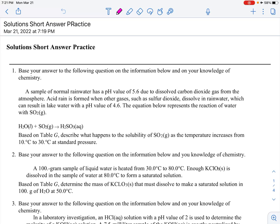Okay, so these are some short answer questions for solutions. First of all, you should have your reference table. Base your answer to the following question on the information below and your knowledge of chemistry. A sample of normal rainwater has a pH value of 5.6 due to dissolved carbon dioxide gas from the atmosphere. Based on table G, describe what happens to the solubility of SO2 gas as the temperature increases from 10 to 30 degrees Celsius at standard pressure.